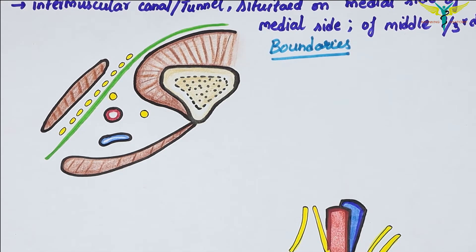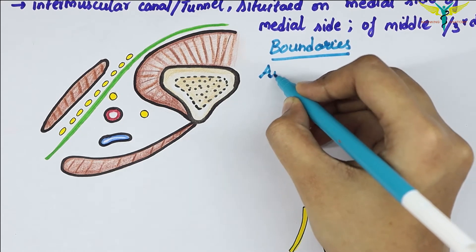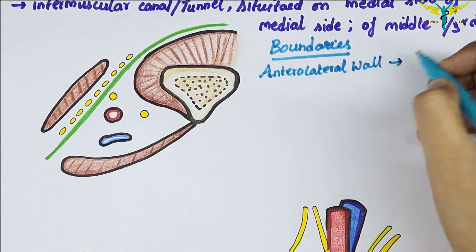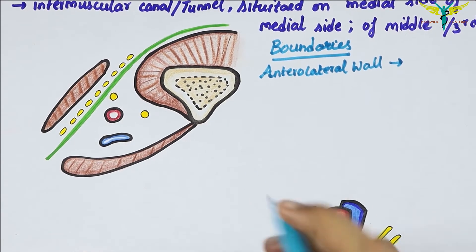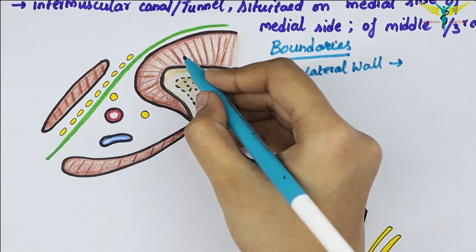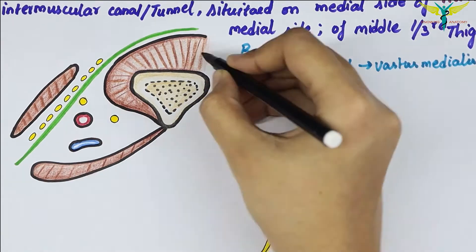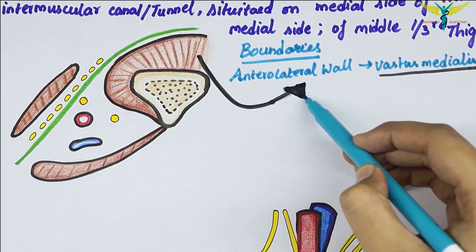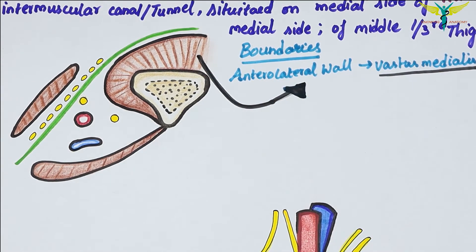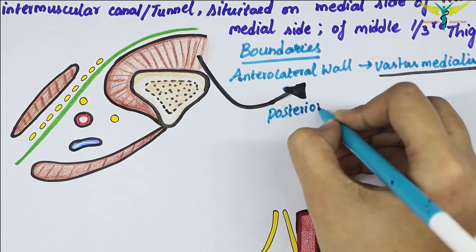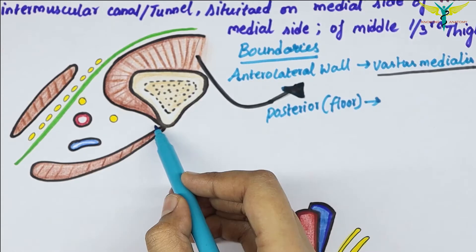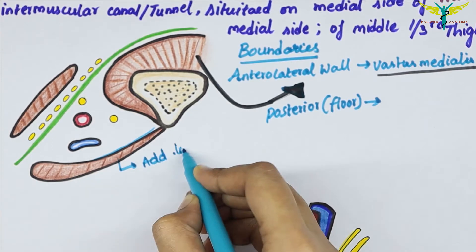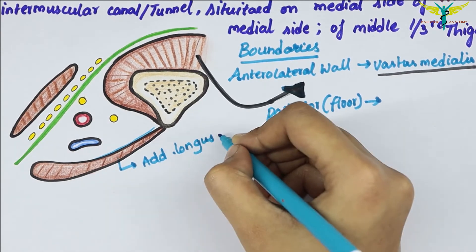The anterolateral boundary or anterolateral wall of the adductor canal is formed by the vastus medialis muscle. This is the anterolateral boundary as seen in the diagram.